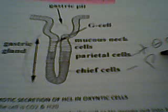The distal regions and glands do not possess chief or oxyntic cells, but they do produce a lot of mucus. The G cells synthesize and release gastrin into the interstitium, which helps in the motility of mucus.